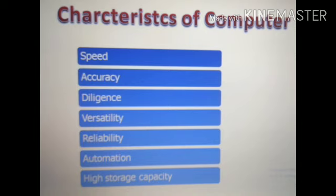So you can see the first characteristic is speed. A computer works with much higher speed. It can process millions of instructions per second. Second, accuracy: computer can perform calculations with hundred percent accuracy. Any error that occurs is due to data inconsistency or inaccuracy.